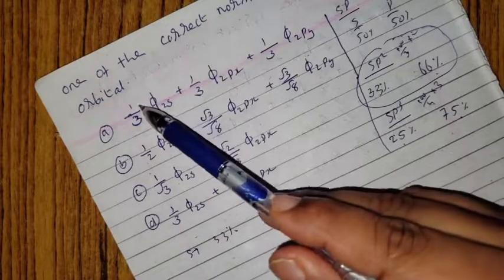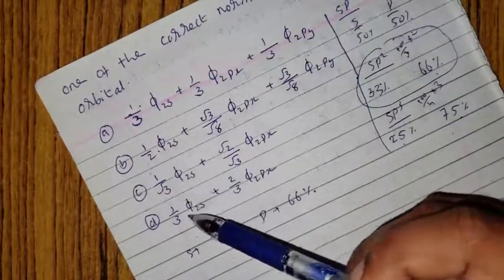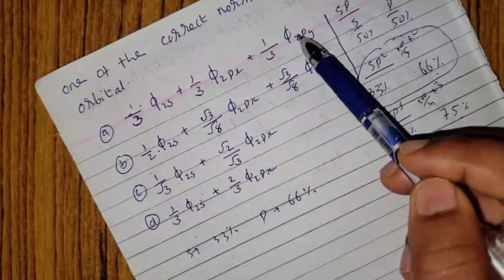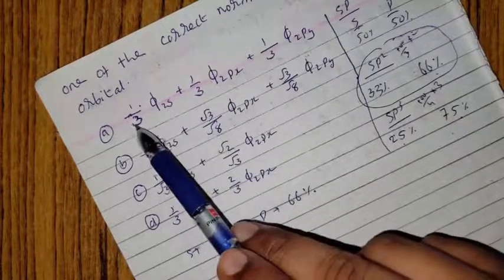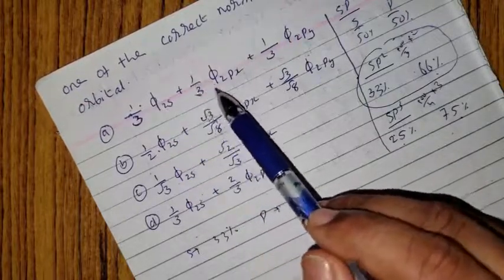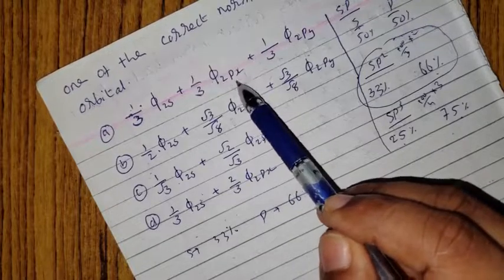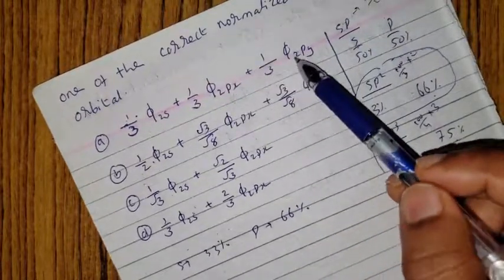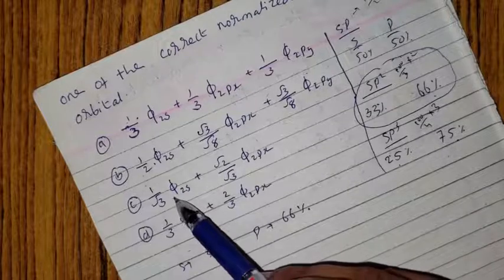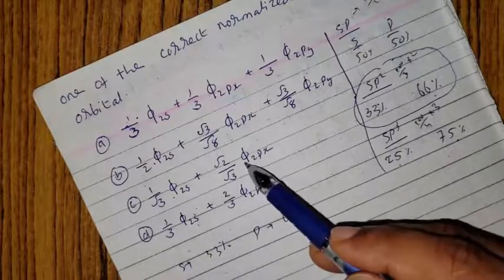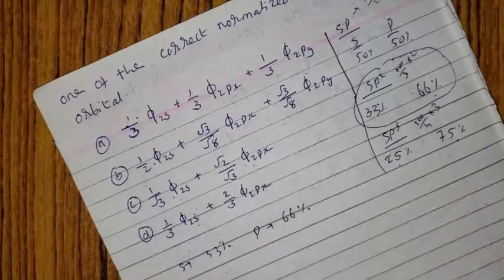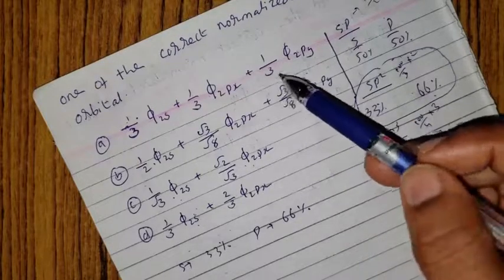The first option: 1 by 3, 1 by 2, 1 by root 3, and 1 by 3. This is the S character normalization function, the other one is the P character. 1 by 3 times φ_S plus 1 by 3 times φ_Px plus φ_Py. This is the P orbital. The first one is S orbital, the second and third are P orbitals.